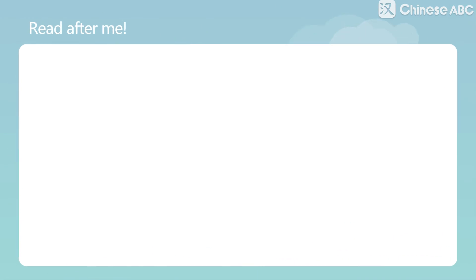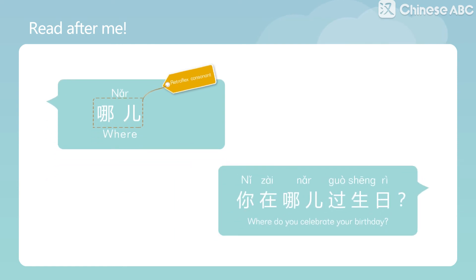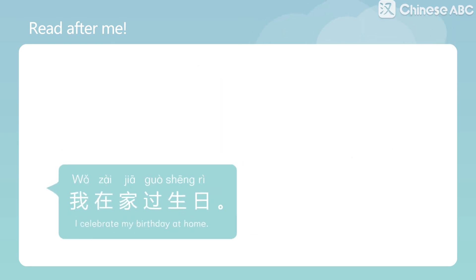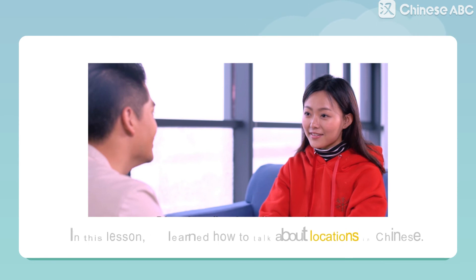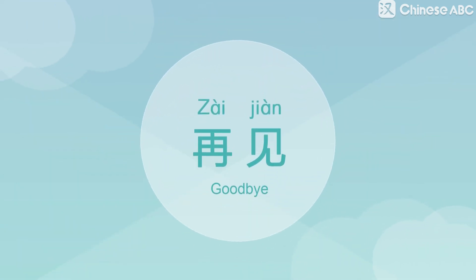Now follow me in reading these sentences: 哪儿. 你在哪儿过生日? 我在家过生日. In this lesson, we learned how to talk about locations in Chinese. 再见. Goodbye. See you next time.